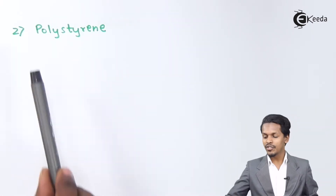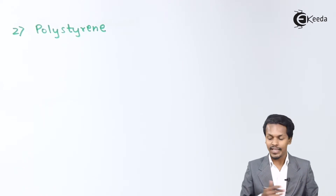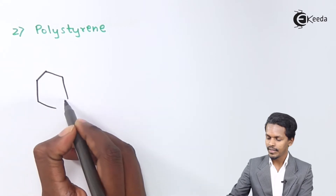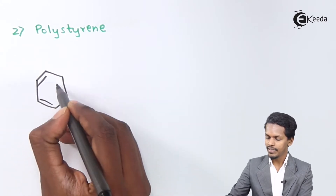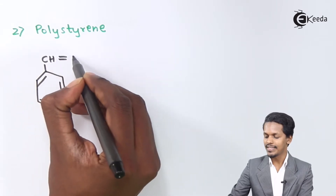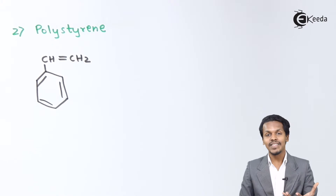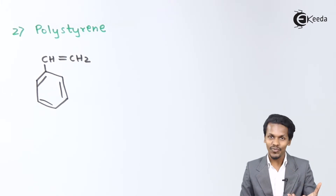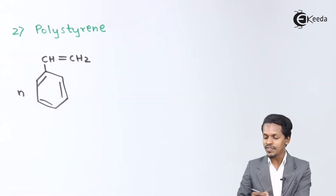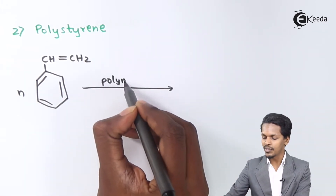The next is the preparation of polystyrene. Styrene consists of a benzene ring attached to –CH=CH2. In this case, as with the previous examples, we are dealing with a derivative of ethene or alkene. We use n moles of styrene, and this undergoes a polymerization process.